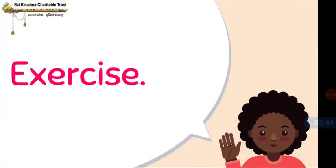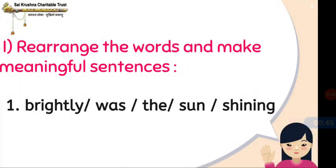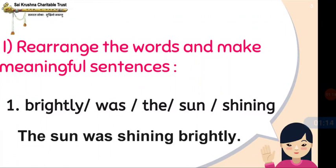So this is the exercise part. The first exercise is to rearrange the words and make meaningful sentences. First question: 'brightly was the sun shining.' You have to arrange the sentence in correct order. Try, children. The answer is: The sun was shining brightly.